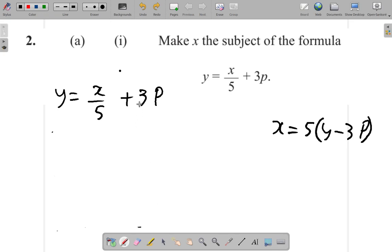Suppose, instead of multiplying by 5 first, suppose I, remember, first of all, I want x alone equal. Now, suppose I get rid of 3p first. I want to get rid of 3p and then get rid of the 5. A while ago, I got rid of 5 first, then got rid of 3p.